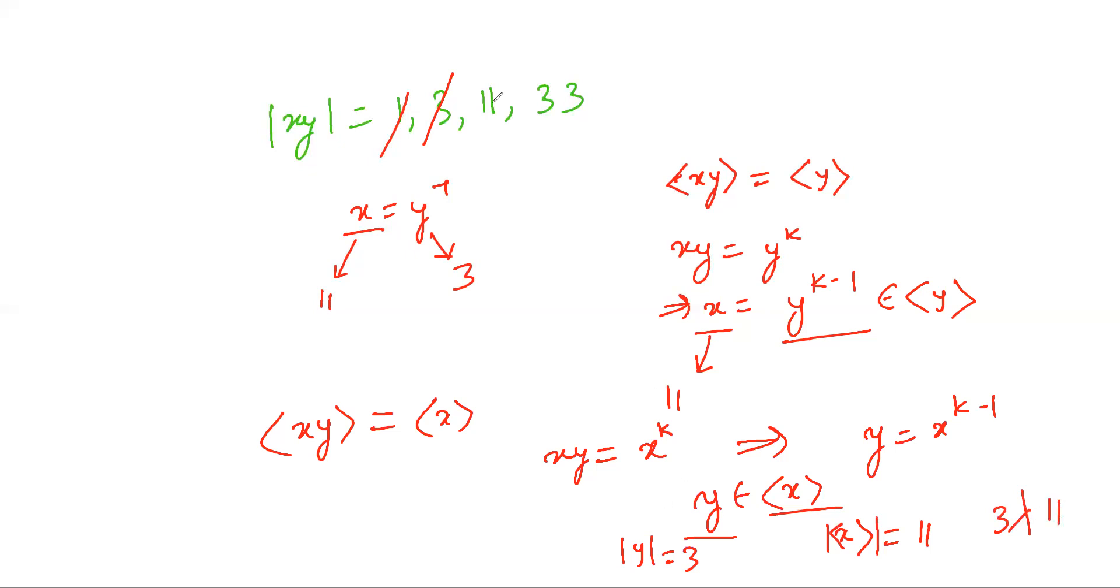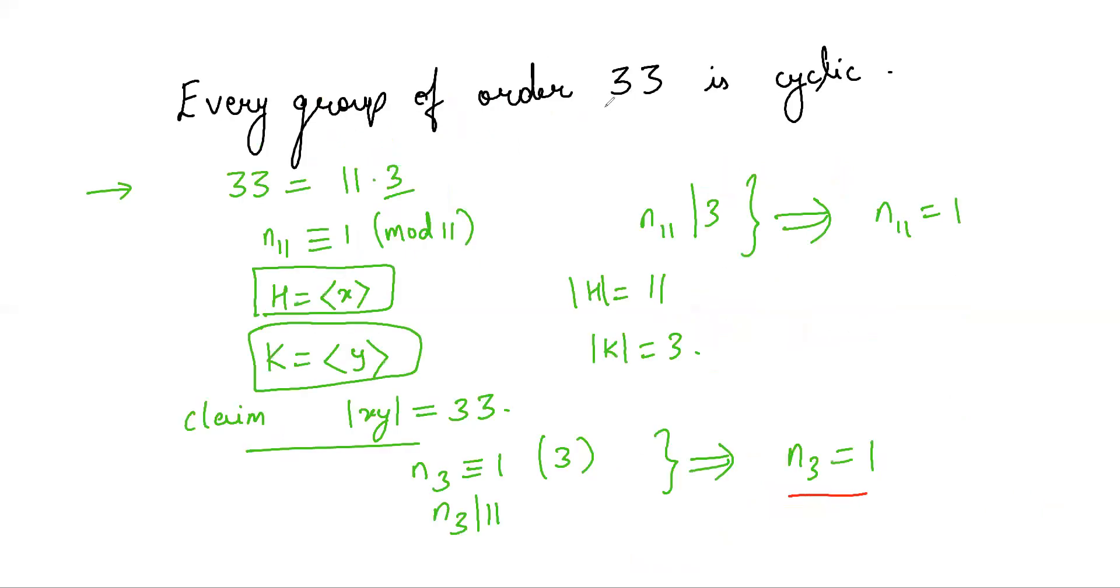So by Lagrange's theorem, 11 cannot be the order of xy. The only possible order of xy is 33, and hence we have found an element in the group of order 33. As a result, the group is cyclic.